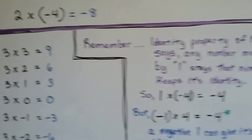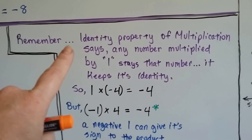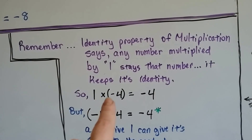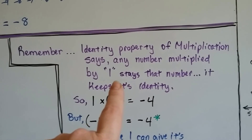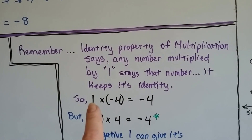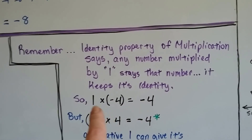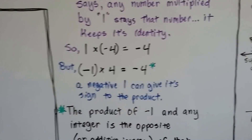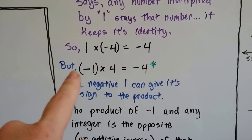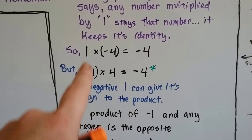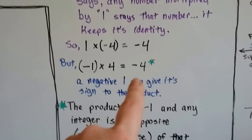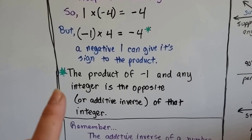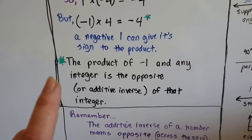Now there's something else I want to show you. Do you remember the identity property of multiplication? It said that 1 times any number is that number — it keeps its identity. So 1 times 4 is 4, 1 times 99 is 99. Because of this identity property, 1 times negative 4 is going to be negative 4, and 1 times negative 99 is negative 99. But here's what's really cool: if we have negative 1 times 4, now that 1 is the negative number, and it gives us negative 4. A negative 1 can give its sign to the product — the product of negative 1 and any integer is the opposite, or additive inverse, of that integer.